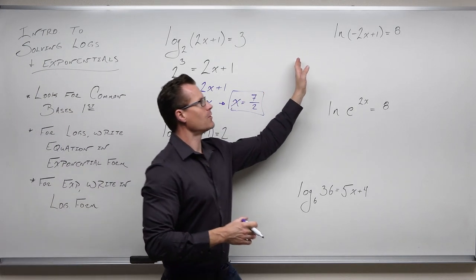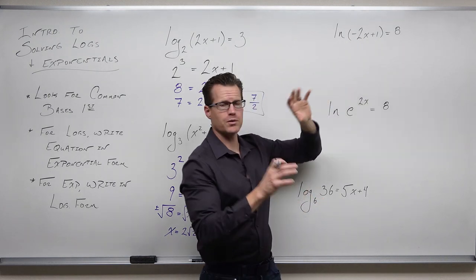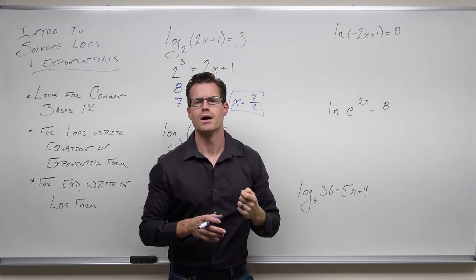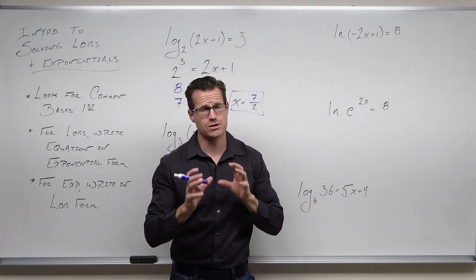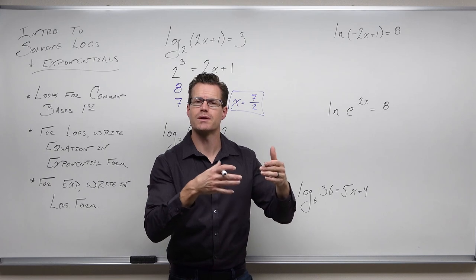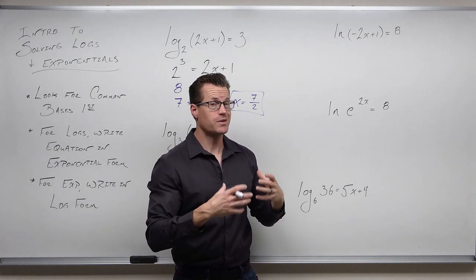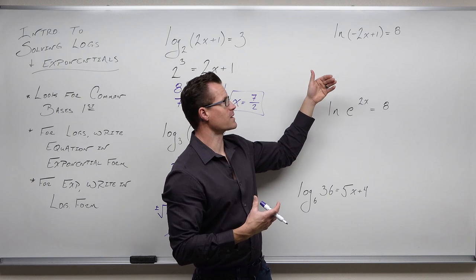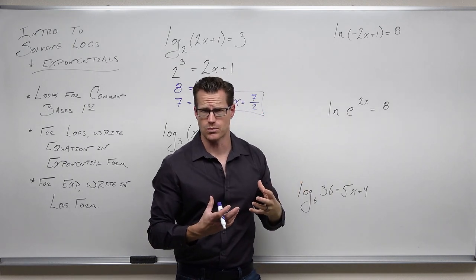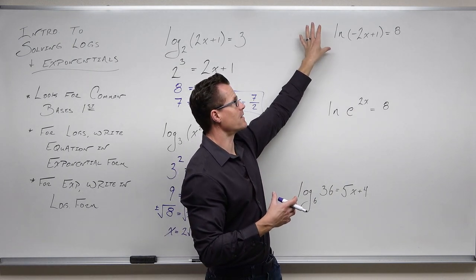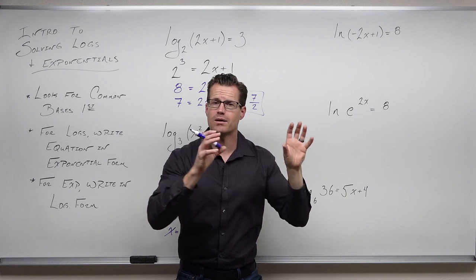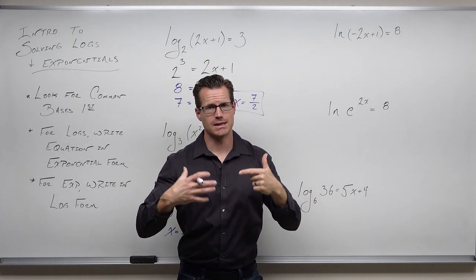Remember: if you have a logarithm, you've checked for common bases and don't have them. You just have one logarithm isolated. When you have ln, it stands for a logarithm with a base of e — the natural number. So this is a logarithmic equation. I check for common bases, but I only have one logarithm; you'd need two for common bases to work. My logarithm is isolated — nothing being added, subtracted, or multiplied. We need to get an exponential from that.